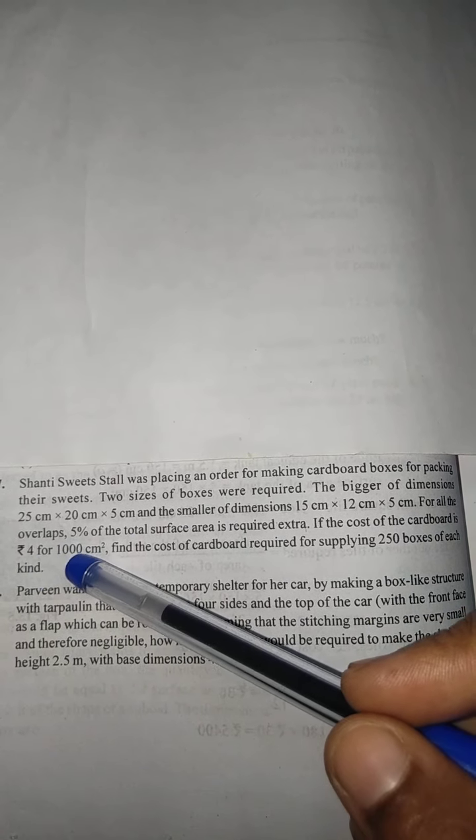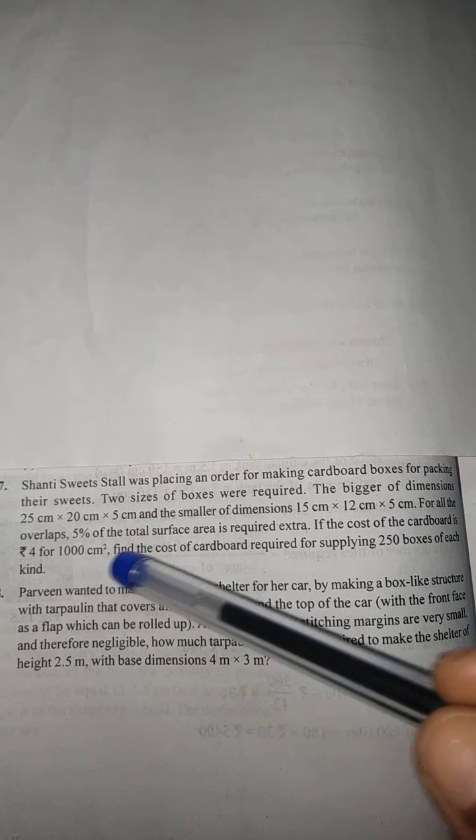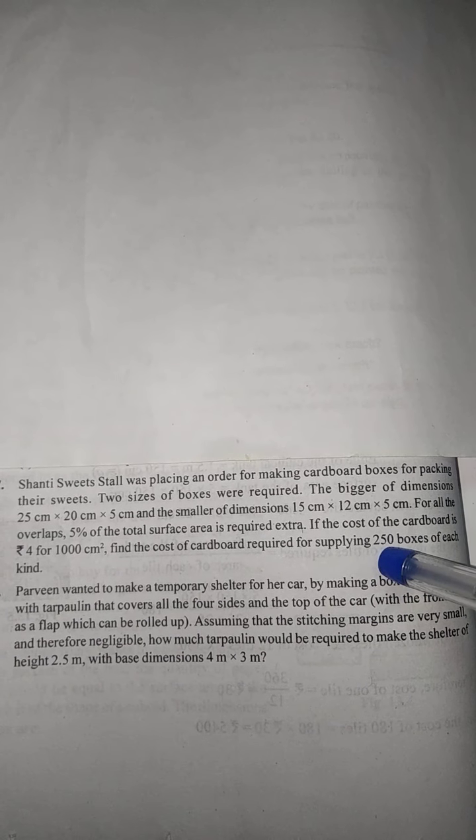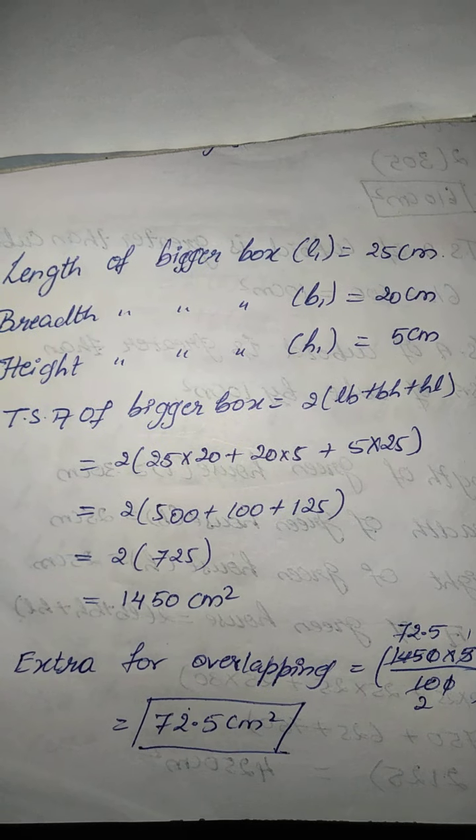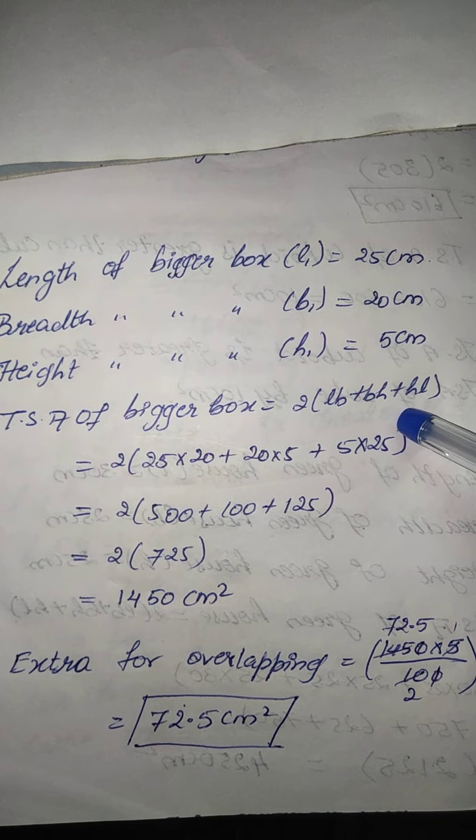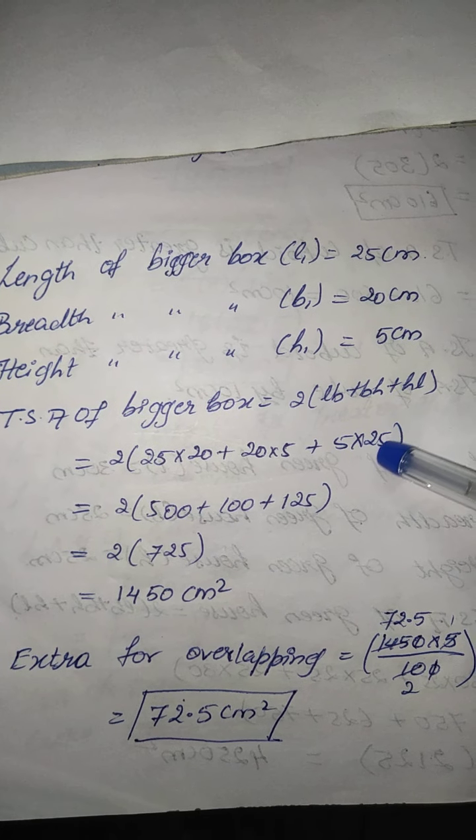And then we will multiply with 4 per centimeter square, then we will multiply for 250 boxes, then we will find the final amount, children. Here, now I begin the sum like this - I will consider the TSA of the bigger box.